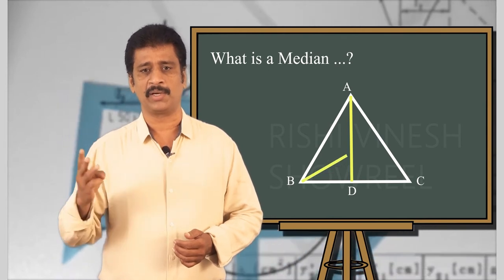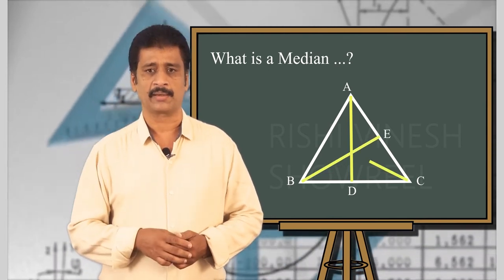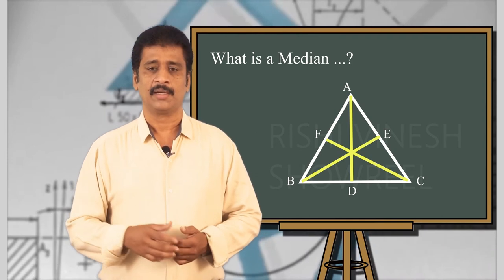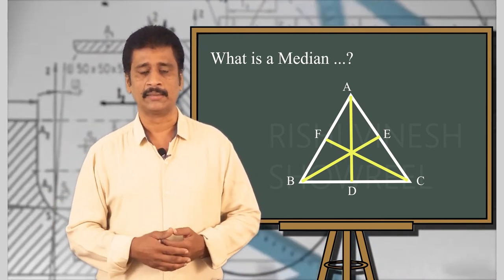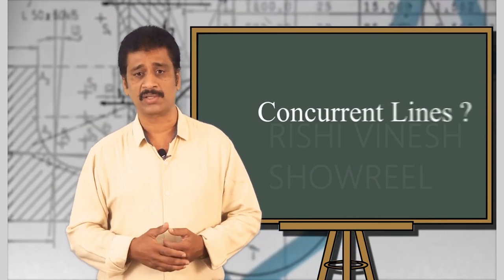Three medians can be drawn in a triangle ABC. The medians of the triangle ABC are concurrent. So, what are concurrent straight lines?